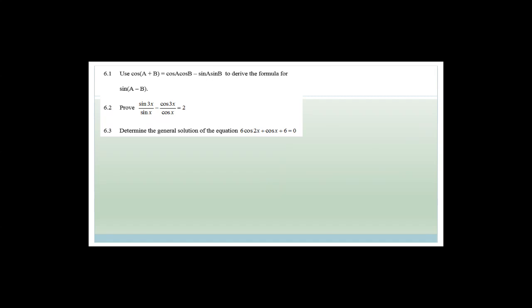It says: use cos(A plus B) equals cos A cos B minus sin A sin B to derive the double angle formula. I'm not going to do that here — you really need to learn your theory. I've already gone through this in the lessons on trig. Go find the lessons on double angles and compound angles and look for the derivation — I have explained it already.